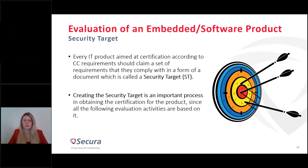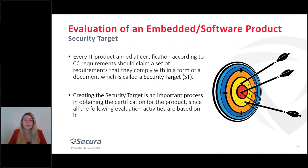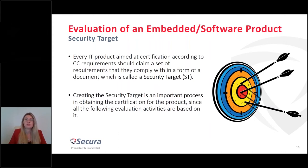Every IT product aimed at CC certification should claim a set of requirements in a document called the Security Target. Creating the Security Target is a critical step, because all following evaluation activities are based on it. The evaluation process has two main parts: first, evaluate the Security Target; then evaluate the security of the product itself. The Security Target is the responsibility of the sponsoring party — either the developer or a third party.